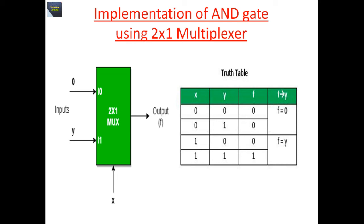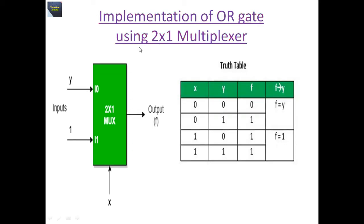This is the implementation of an OR gate using a 2x1 multiplexer. Here i0 is provided as y and i1 is always 1. x is the selection line. Since OR is addition: 0+0 = 0, 0+1 = 1, 1+0 = 1, and 1+1 = 1. This truth table confirms it is an OR gate, implemented using a 2x1 multiplexer.